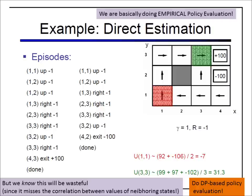What is the major problem with direct estimation? There is an internal consistency within the Markov decision process. The value of a state depends on the value of the next state plus the immediate reward and transition probabilities. That internal consistency is not present in direct estimation. For example, the value of state 2,3 should be approximately the value of state 3,3 minus 1, but direct estimation may not respect this Bellman consistency.